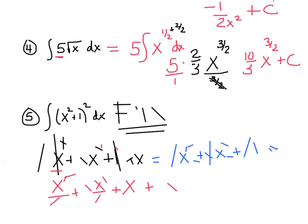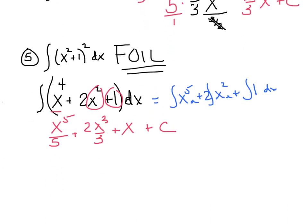It's easy to check — just take what you integrated and quickly take its derivative. The derivative of the constant is zero, the derivative of x is 1, the derivative of 2x cubed over 3 gives 2x squared, and bringing the 5 down gives x to the 4th.